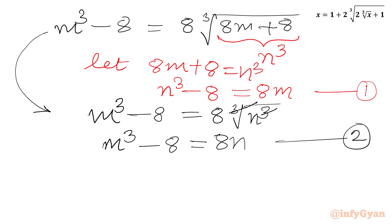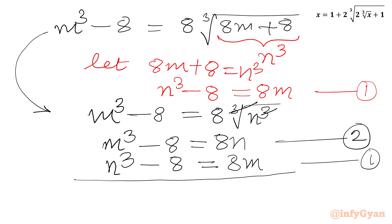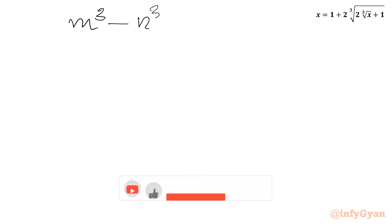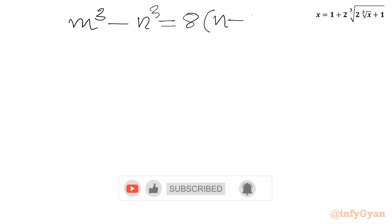After substitution, our equation will become m cubed minus 8 equal to 8 times cube root of n cubed. Since cube root and cube cancel, we get our second equation: m cubed minus 8 equal to 8n. Let us call this equation 2. Now I will consider both equations. Equation 1 is n cubed minus 8 equal to 8m, and equation 2 is m cubed minus 8 equal to 8n. We will subtract equation 1 from equation 2, so we will get m cubed minus n cubed equal to 8 times n minus m.